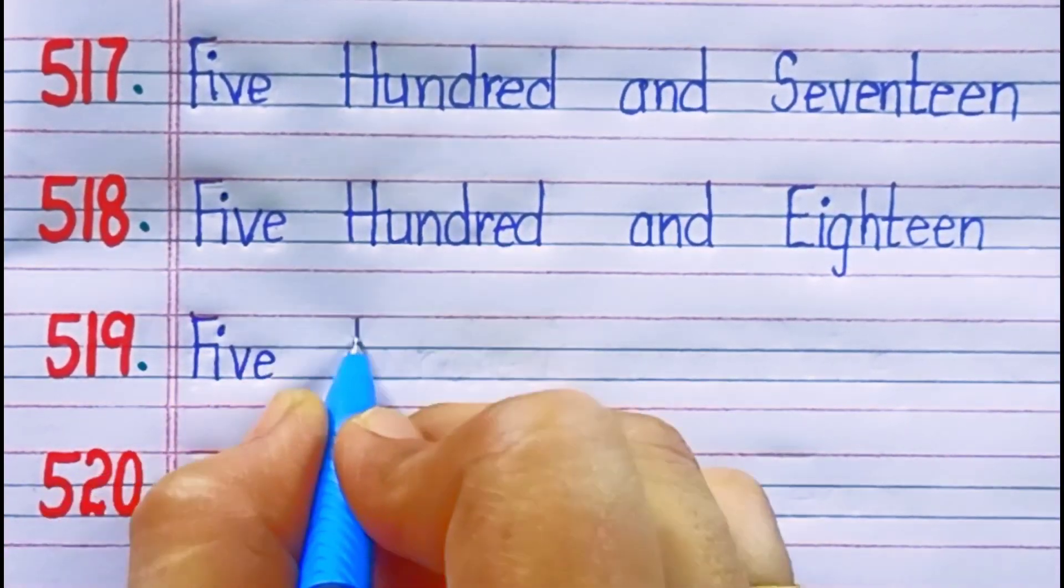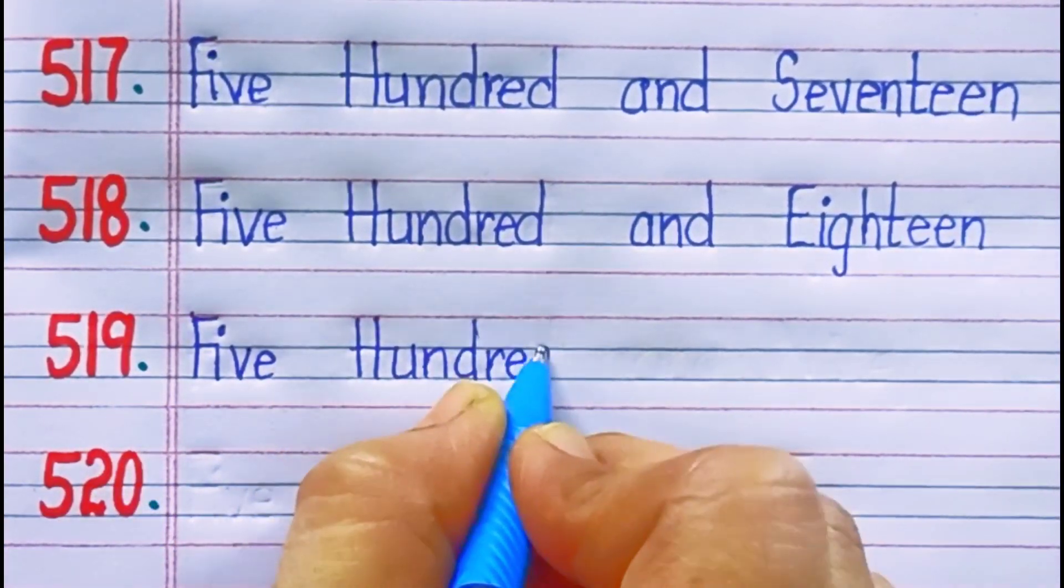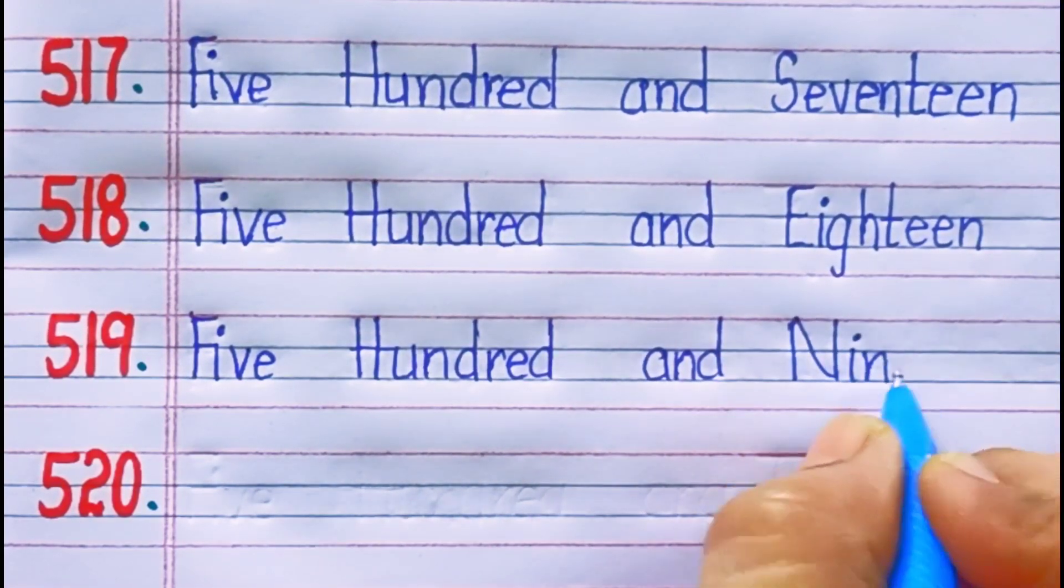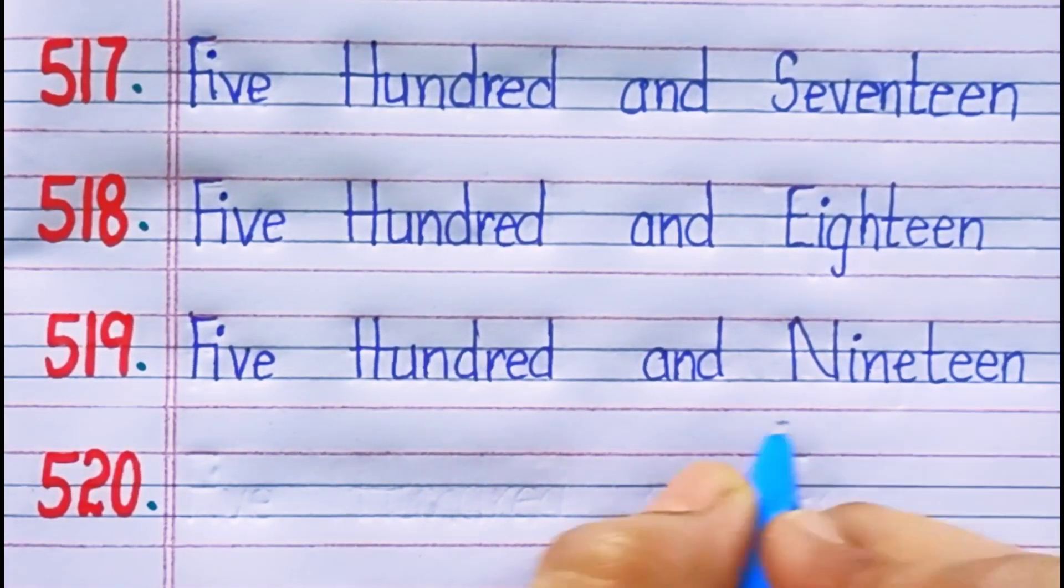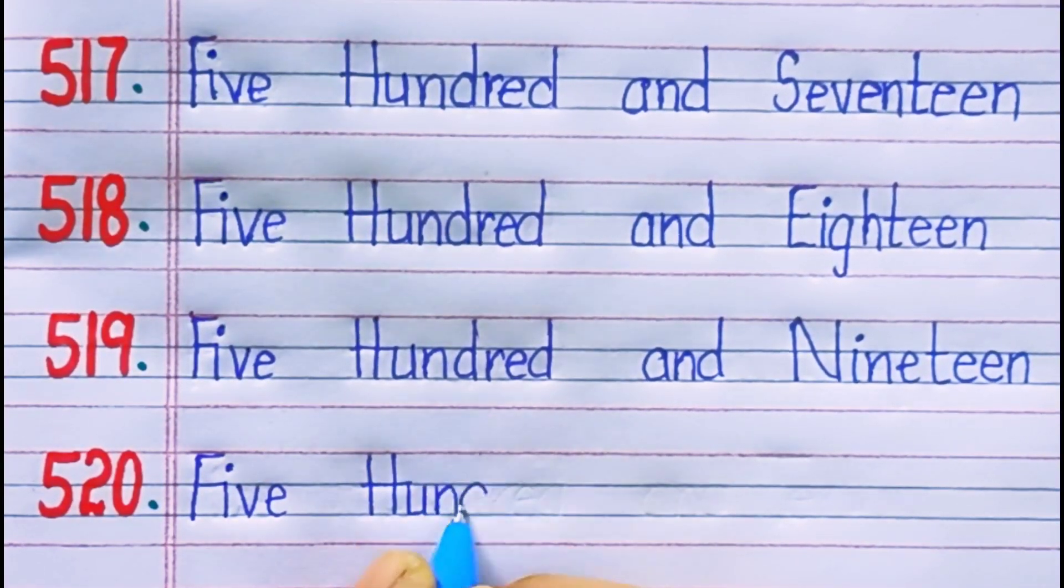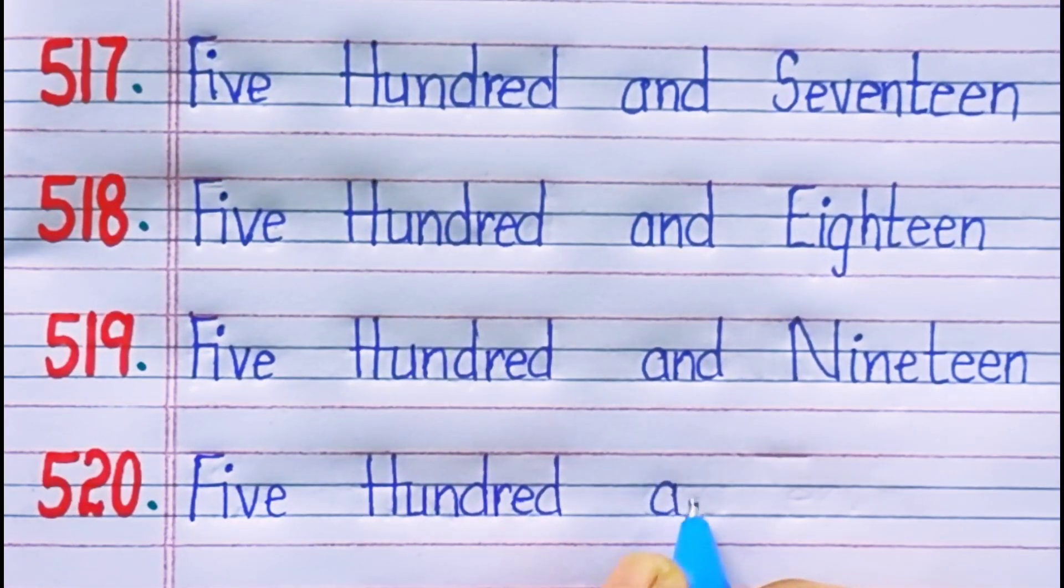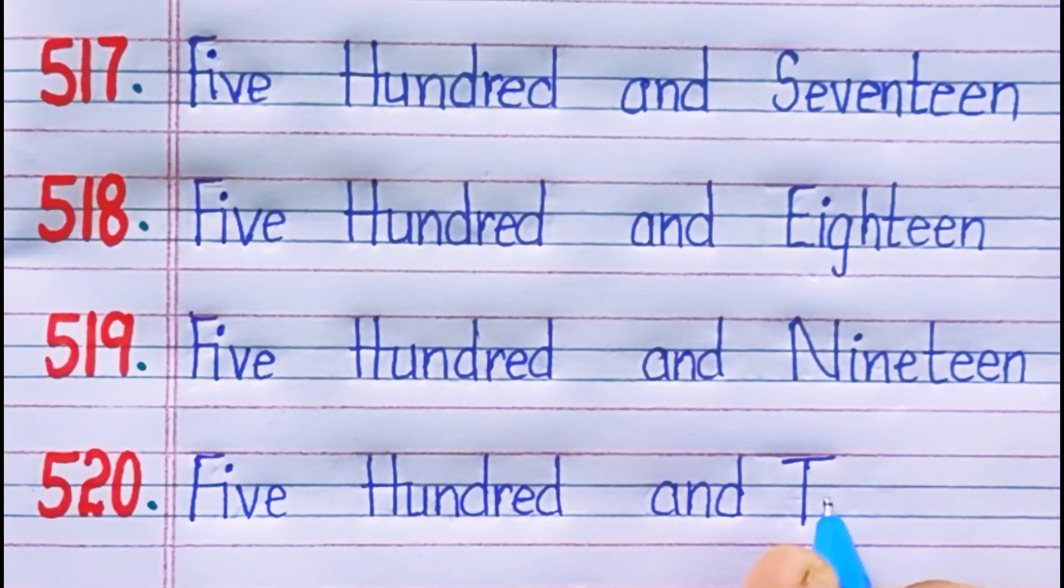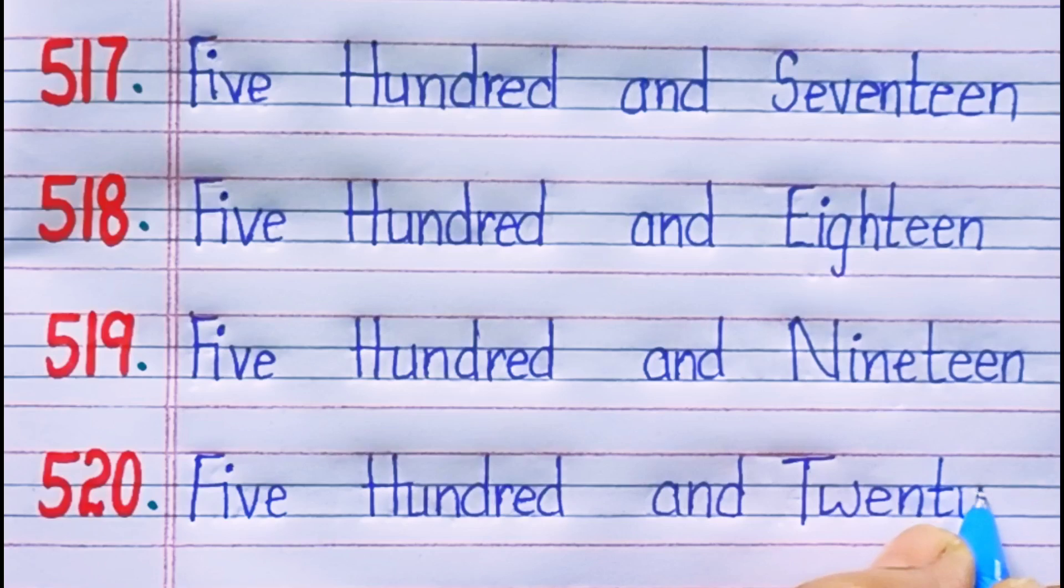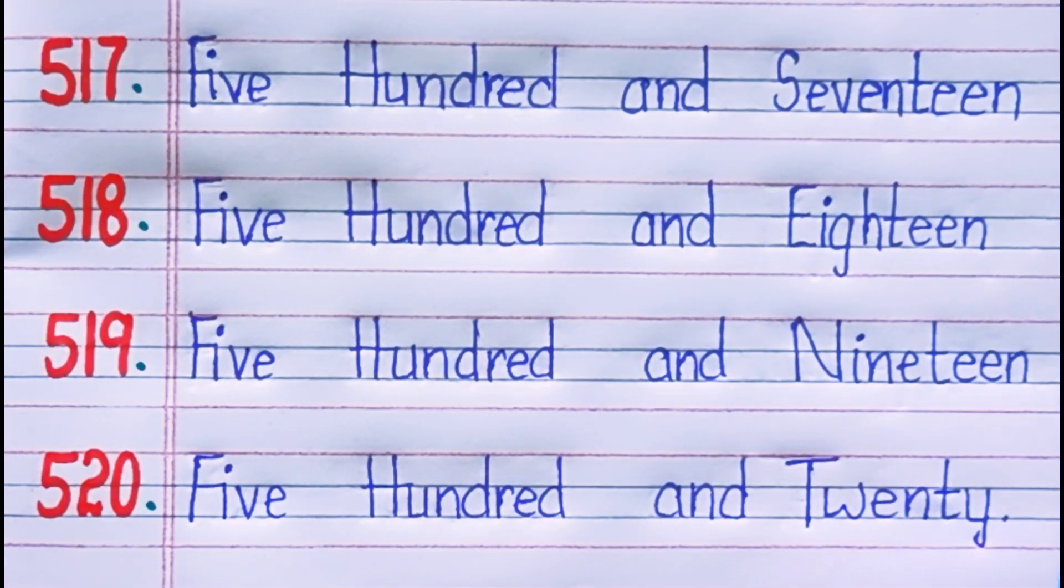Five one nine, five hundred and nineteen. Five two zero, five hundred and twenty. Thank you for watching my videos. For more videos, subscribe to my channel.